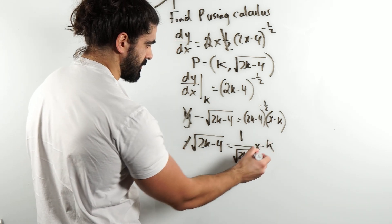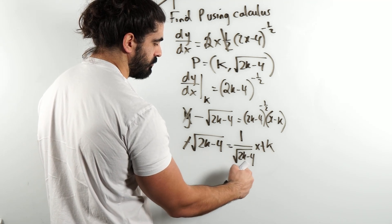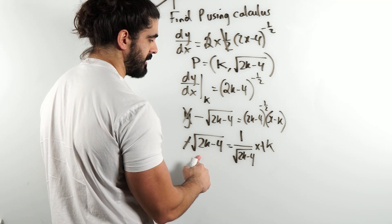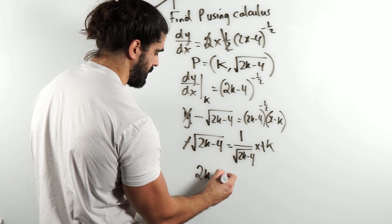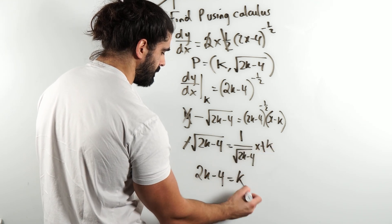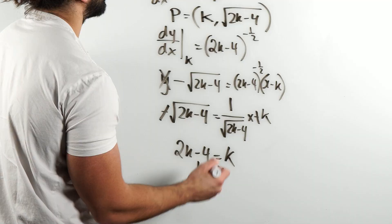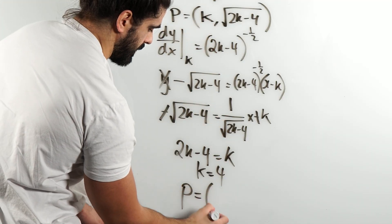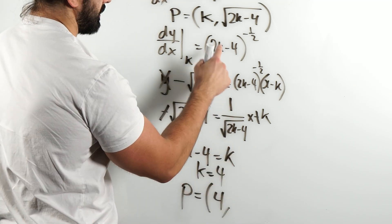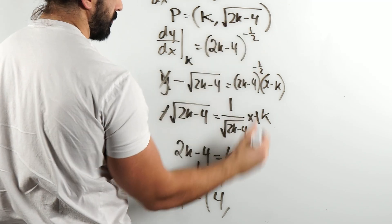Cancel the minuses on both sides. We can actually multiply through by this. If we do root 2k minus 4 times root 2k minus 4, the roots cancel. So, we're left with 2k minus 4 equals k. Move the k over, we get k is 4, and we want the full coordinate of P. So, P is 4, then 2 times 4, 8. 8 minus 4 is 4, root that 2.